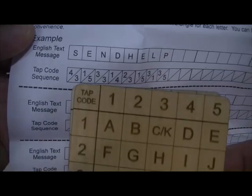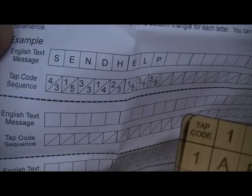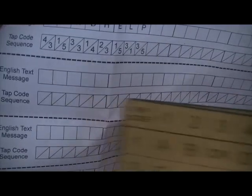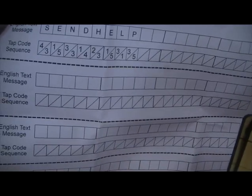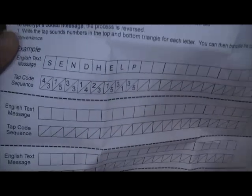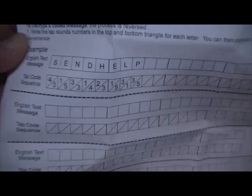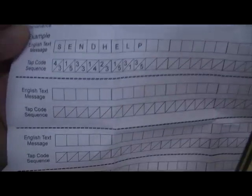So if the message was send help, each letter has the tap code sequence. The S is four across and three down, so you see a four and a three under the S. So you can write out your message, put the tap code sequence, and then send it clearly. If you're trying to do something securely, of course, you would have to destroy this piece of paper after you were done.